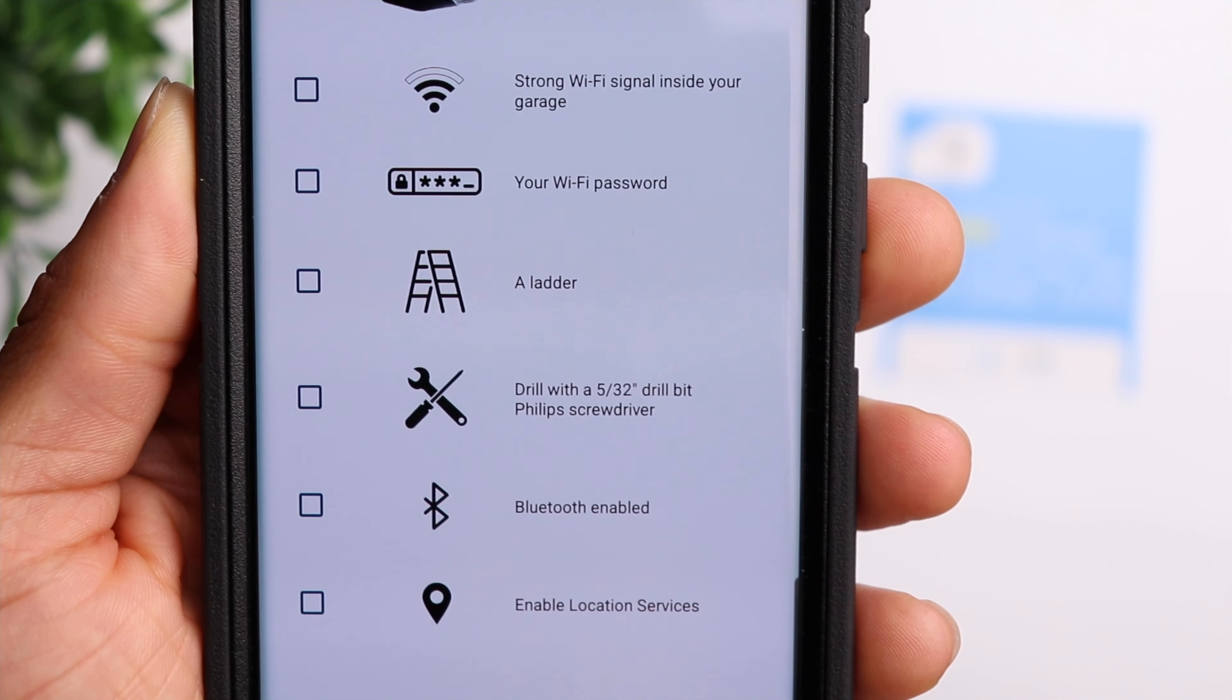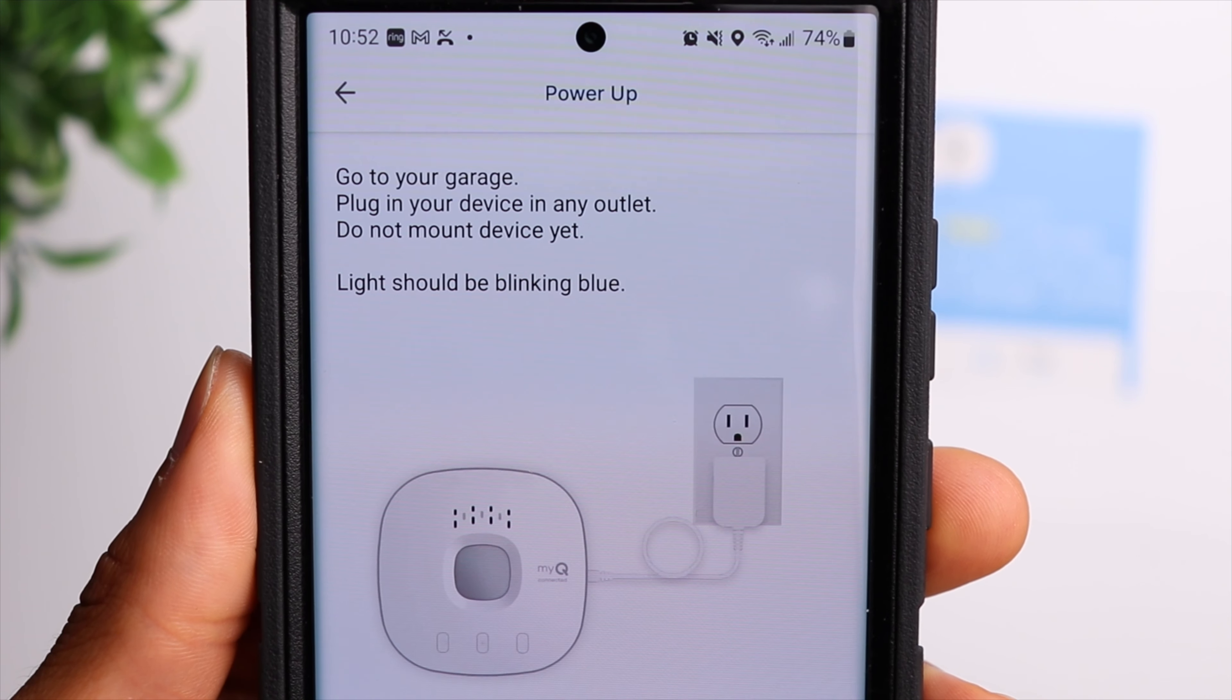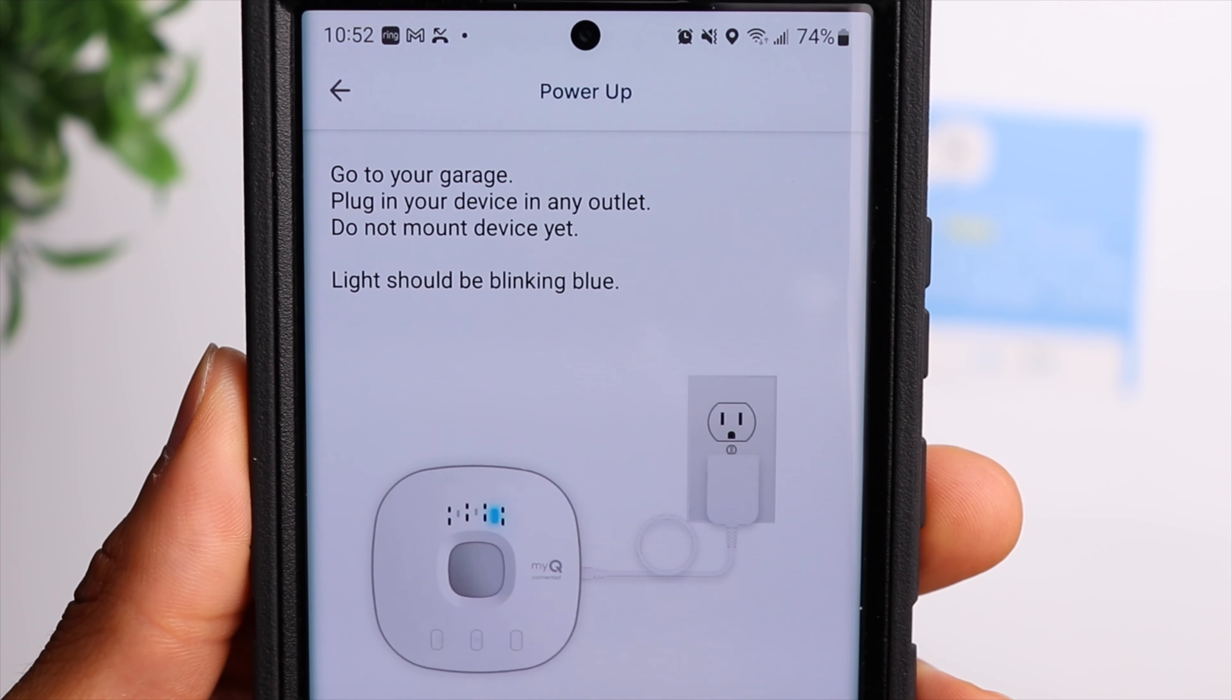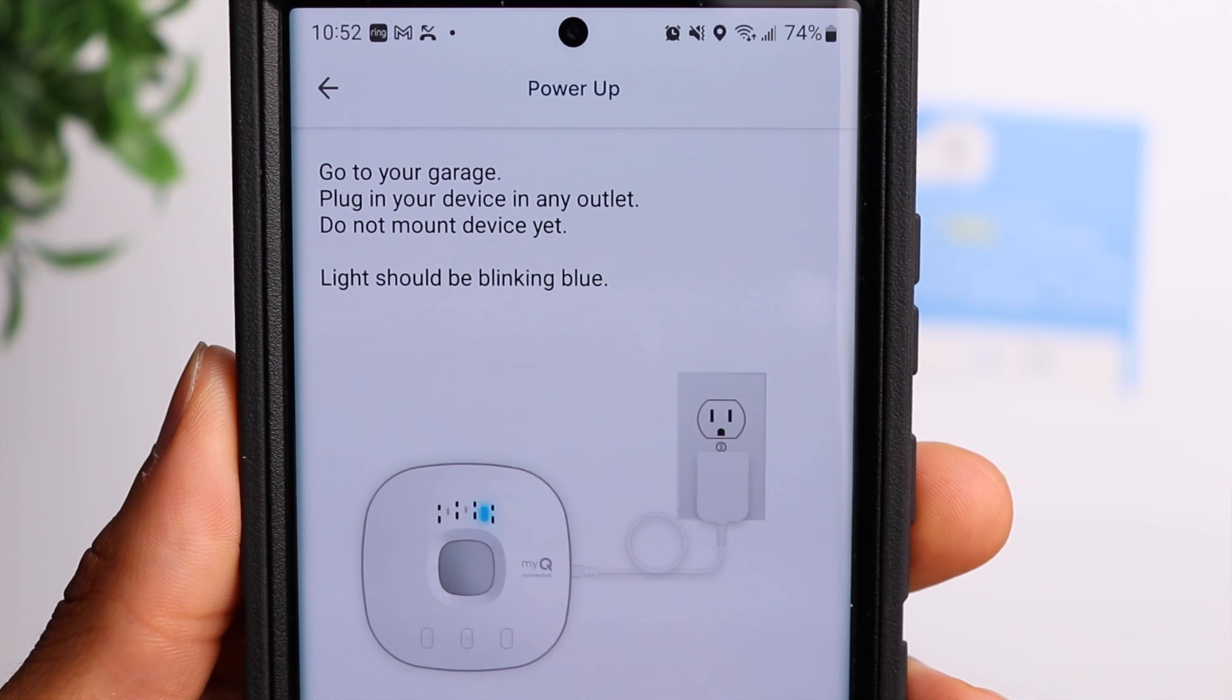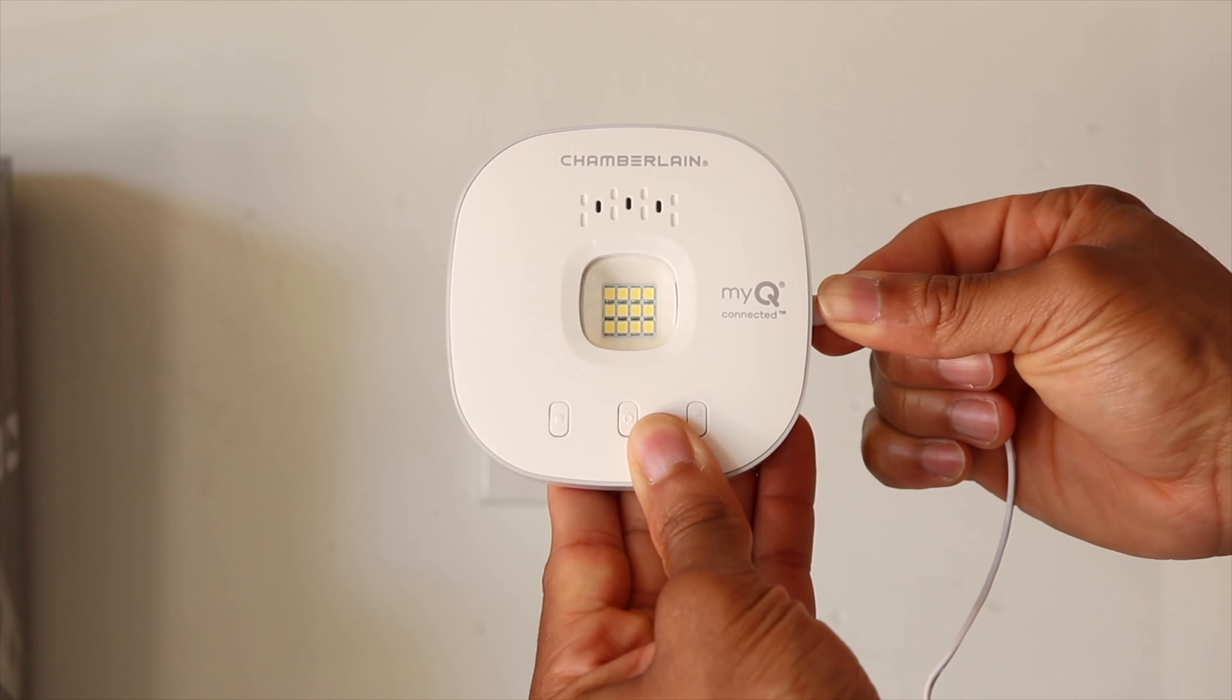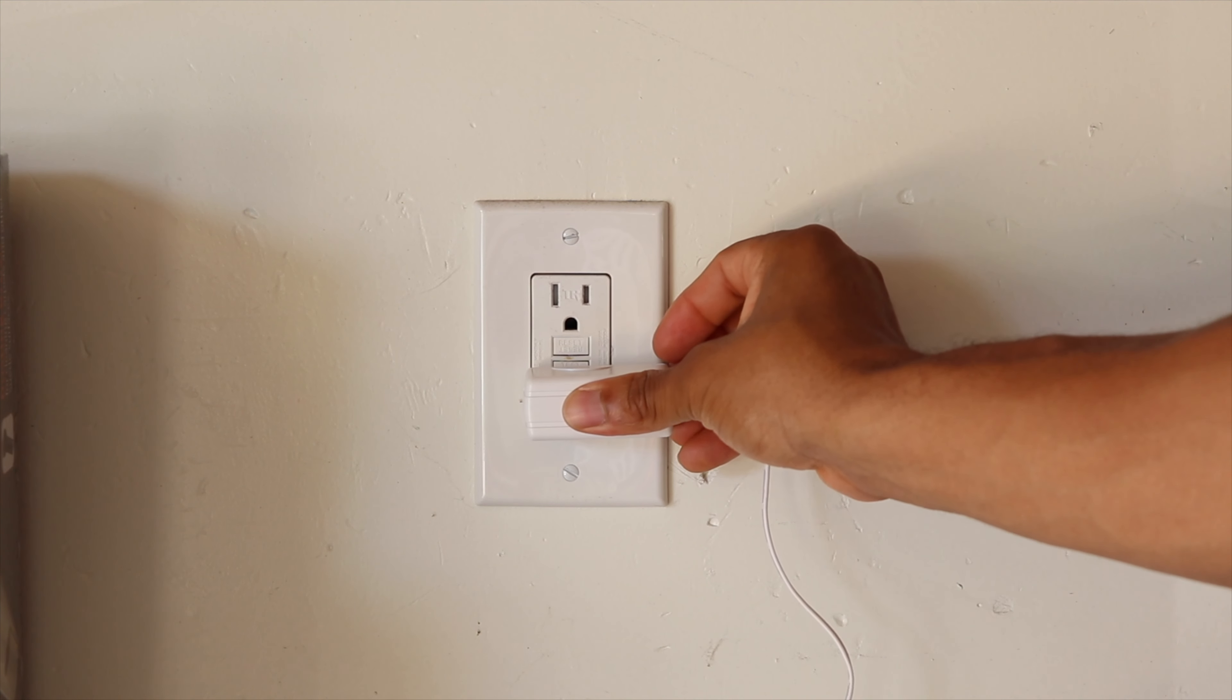Once you confirm those items, it's going to ask you to go ahead and go into your garage and plug the hub into your desired outlet. So once you do that, you should get a blinking blue light.